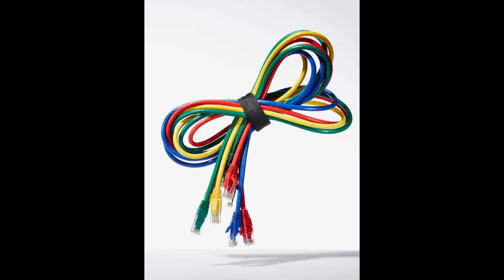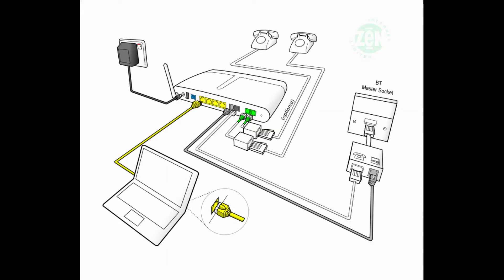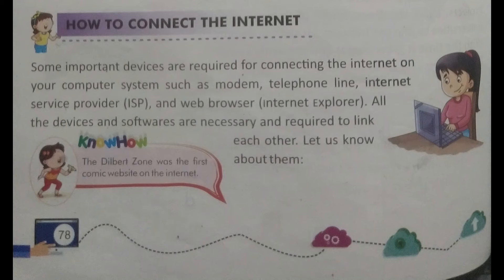The telephone line is used for transferring data from one computer to another, and it is also needed for connecting our computer to the internet. The telephone line connects through the modem — by connecting to the modem, our computer can connect to the internet. Simply having a modem is not enough; you need a modem as well as a proper telephone line. Together, these two devices allow our computer to connect to the internet.